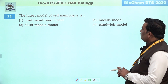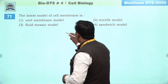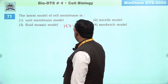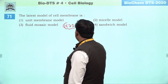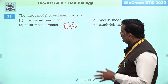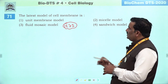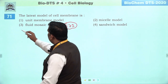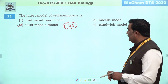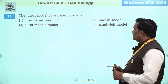Next question: the latest model of cell membrane. 1972 mein yeh model diya gaya hai — Singer and Nicholson ke zariye. Iske baad abhi tak jo NCRT hai aur doosri modern kitaab hai, usmein koi bhi aisa model nahi hai. Isliye isi fluid mosaic model ko modern and latest model maana jaata hai. This is the right answer.